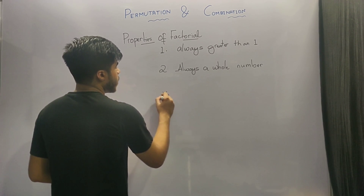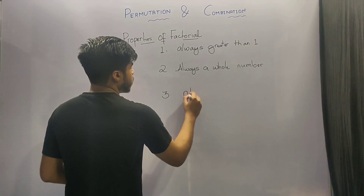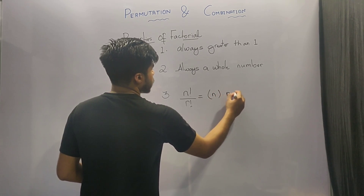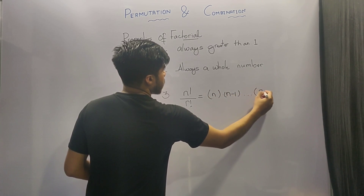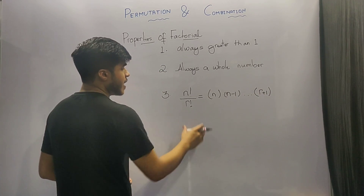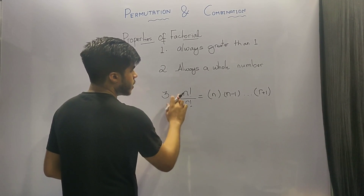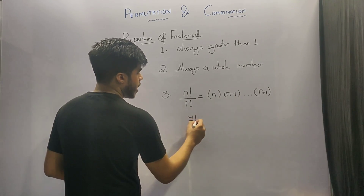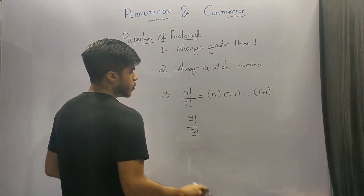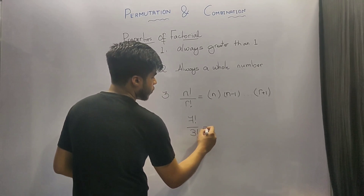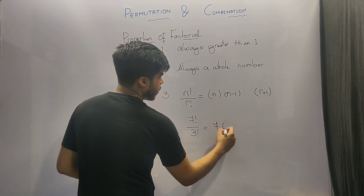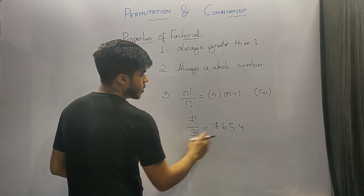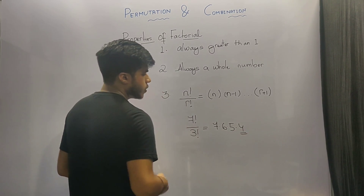The third and last property of factorial is that n factorial divided by r factorial is equivalent to n into n minus 1, up to r plus 1. For example, if n is 7 and r is 3, then 7 factorial upon 3 factorial is equivalent to 7 into 6 into 5 into 4, because r plus 1 equals 4.